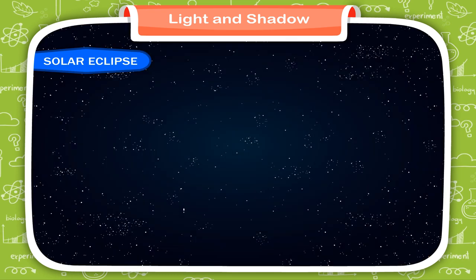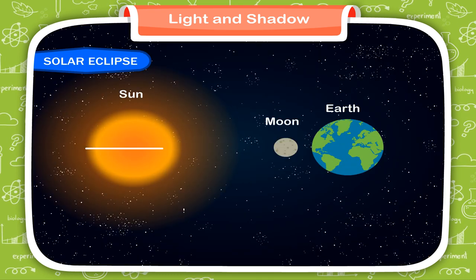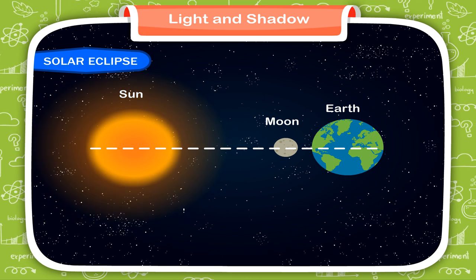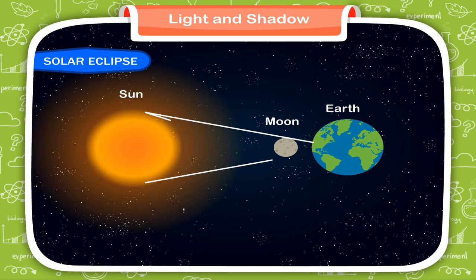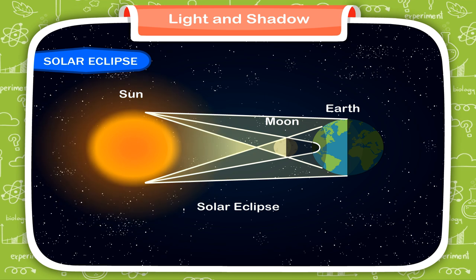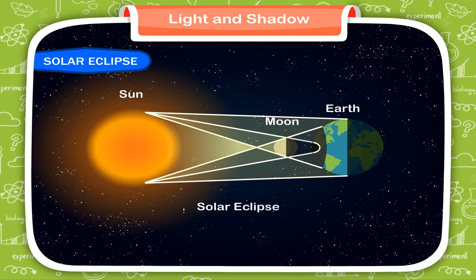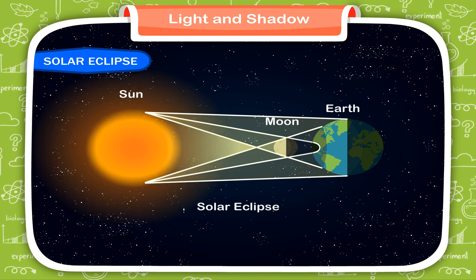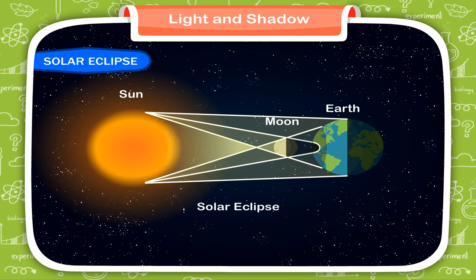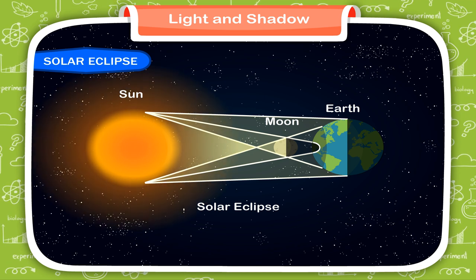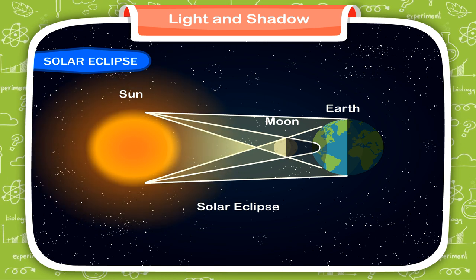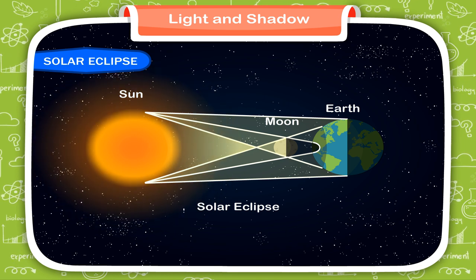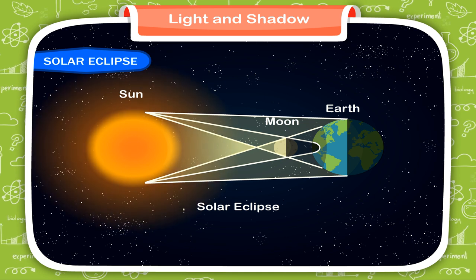Solar Eclipse. When the sun, the moon and the earth come in a straight line with the moon in the middle, the shadow of the moon may fall on some portions of the earth. Then a solar eclipse can be seen from these areas on the earth. During a solar eclipse, the dark side of the moon faces the earth. Therefore, a solar eclipse will always take place on a new moon day. In places where a solar eclipse is witnessed, the sun disappears from the sky for a brief period of time.